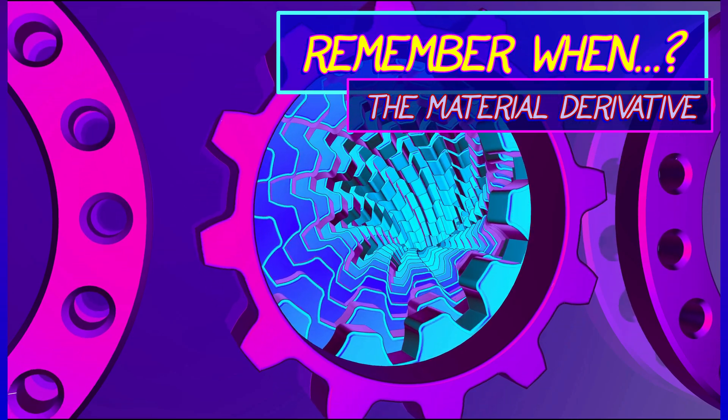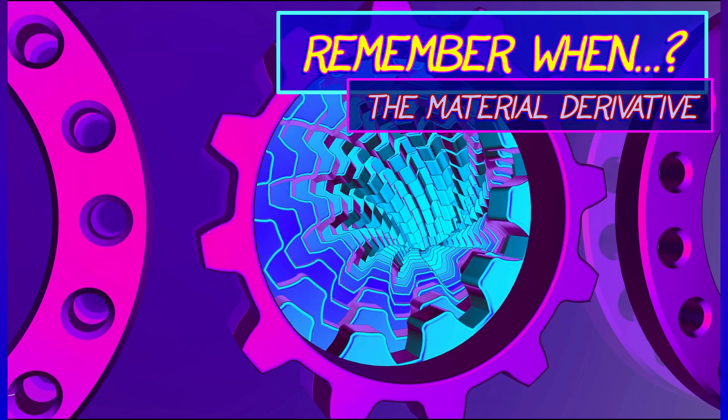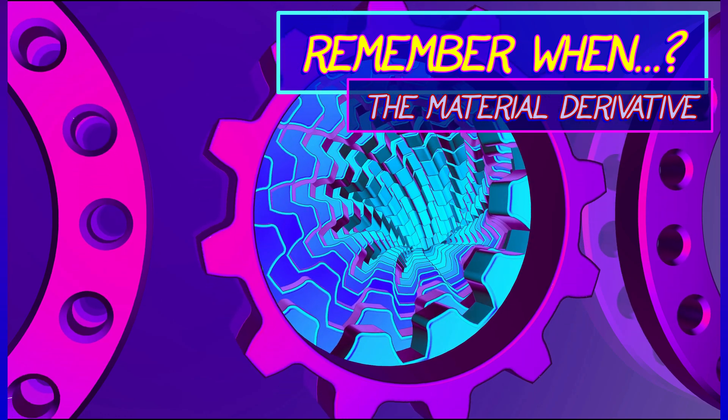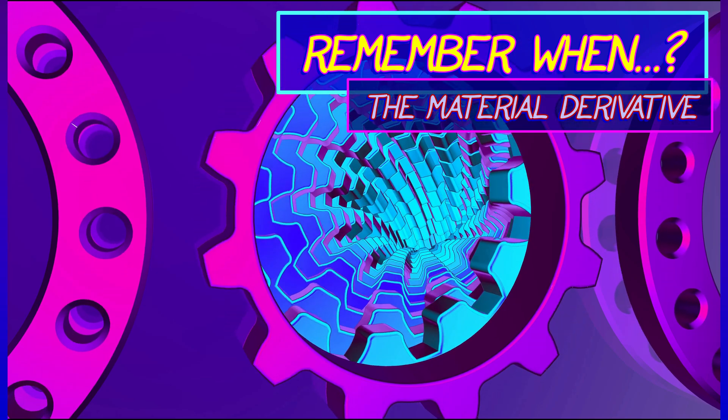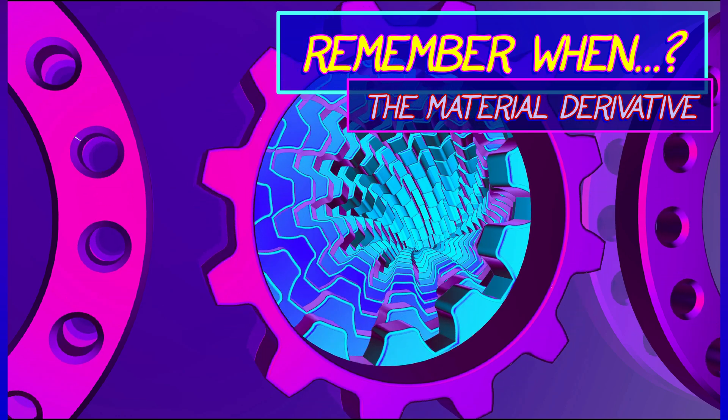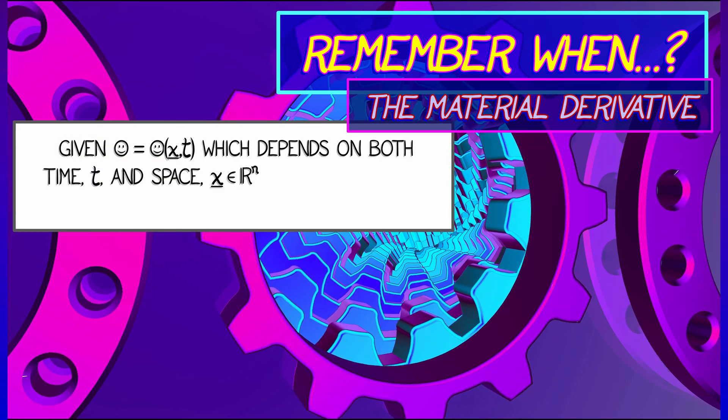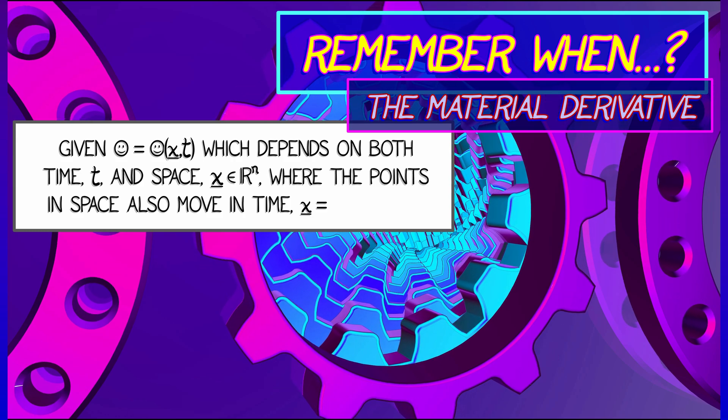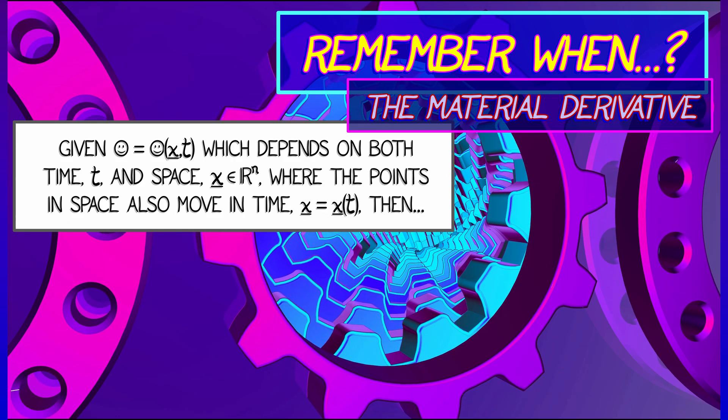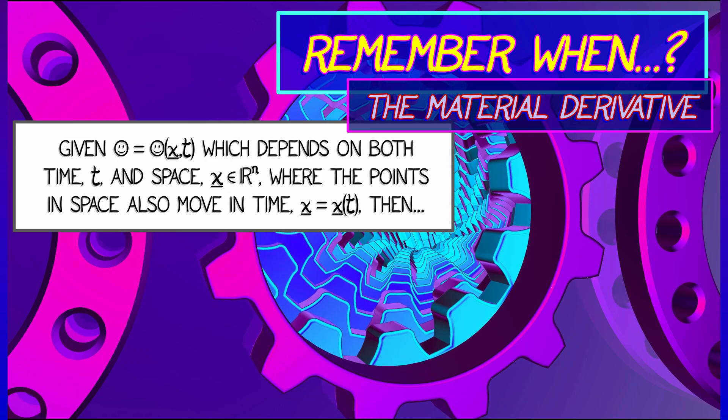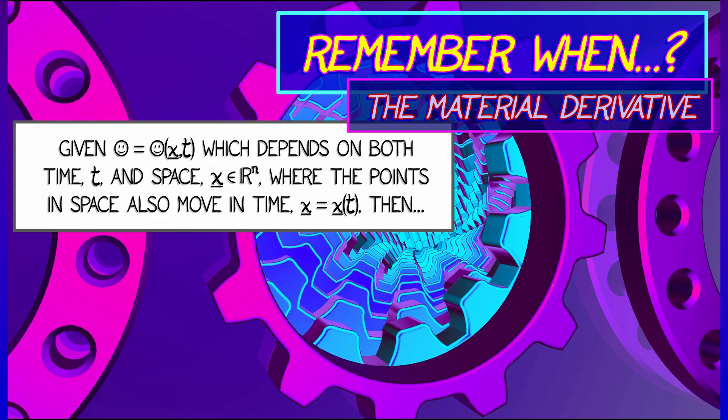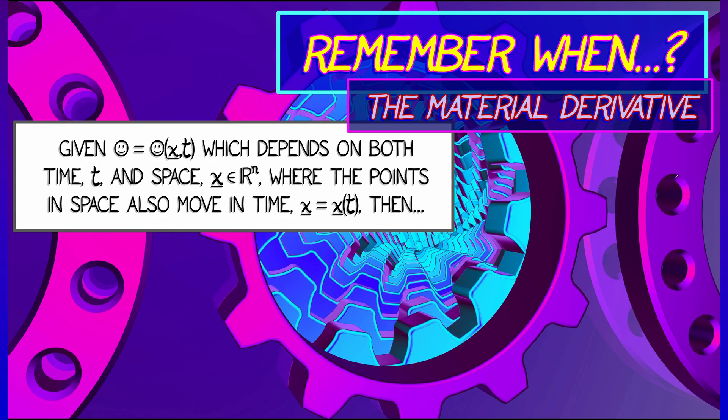Do you remember back when, I think it was in volume two, chapter six, we learned about this as a consequence of the chain rule? Well, let's remember. Let's say you're given some field, Smiley, that depends on time, t and space x, where those points in space are also changing in time. That means x is a function of time.